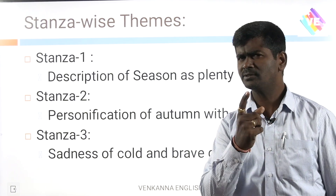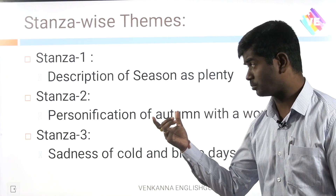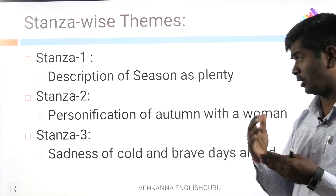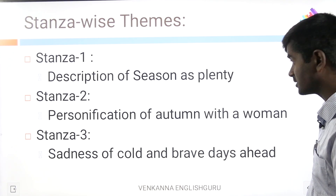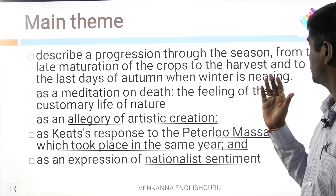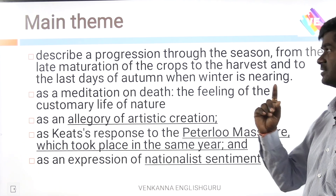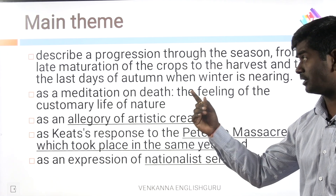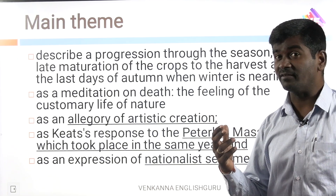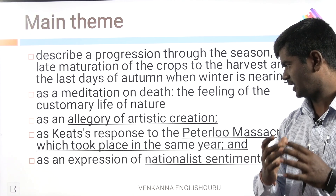Stanza-wise theme of the poem — this you need to know. Stanza 1 talks about the description of the season as plenty. Stanza 2: personification of autumn with a woman — autumn is considered a woman. Stanza 3: sadness of cold and brave days ahead. The broad theme describes a progression through the season, from the late maturation of crops to the harvest, and to the last days of autumn where winter is nearing — and as a meditation on death, the cycle of nature, as an allegory of artistic creation. Keats responds to the Peterloo Massacre, which took place in the same year.